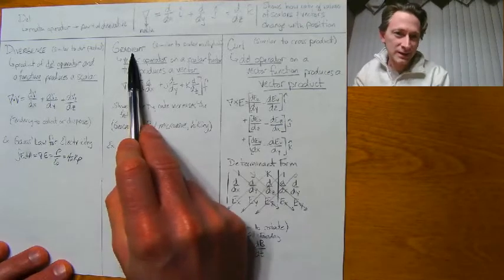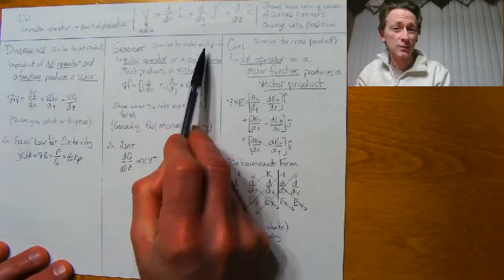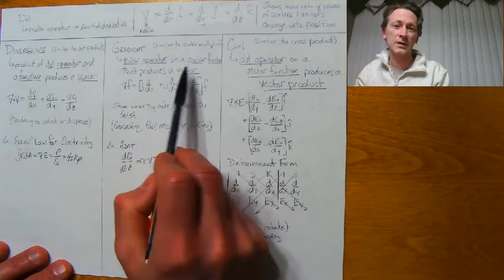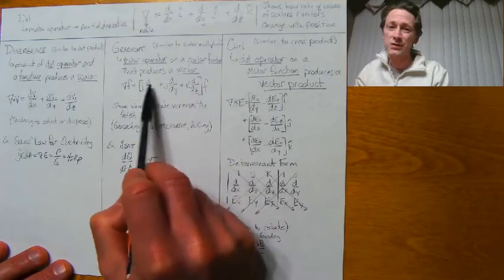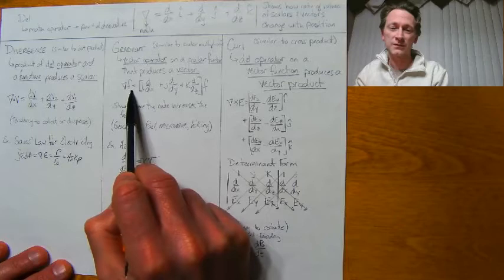The gradient is the second thing that can happen. It's similar to scalar multiplication—the vector operator on a scalar function, but it produces a vector. When we take del times the function,